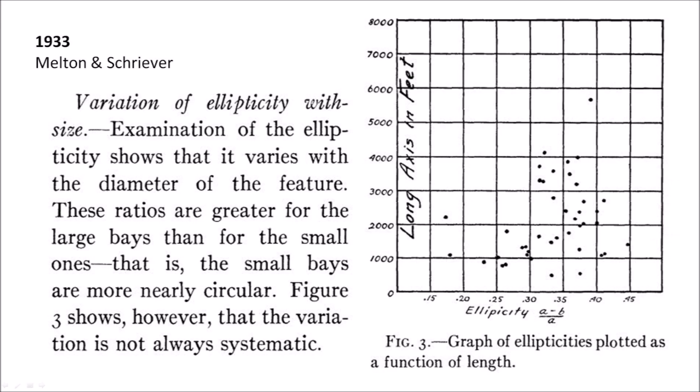Melton and Schreiber graphed the variation of ellipticity with size and noticed that the ellipticity varies with the diameter of the feature. These ratios are greater for the large bays than for the small ones; that is, the small bays are more nearly circular. This graph shows that the variation is not always systematic.